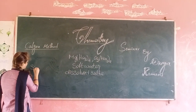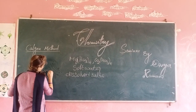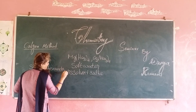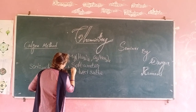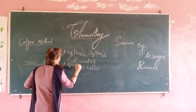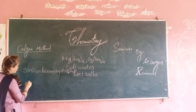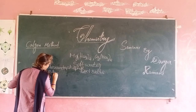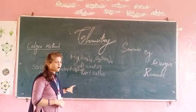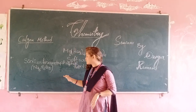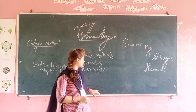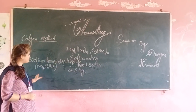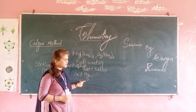Sodium hexametaphosphate is known as Calvon. The formula of sodium hexametaphosphate is Na6P6O18. When hard water is passed over Calvon, the calcium and magnesium ions are removed, and soft water is prepared.